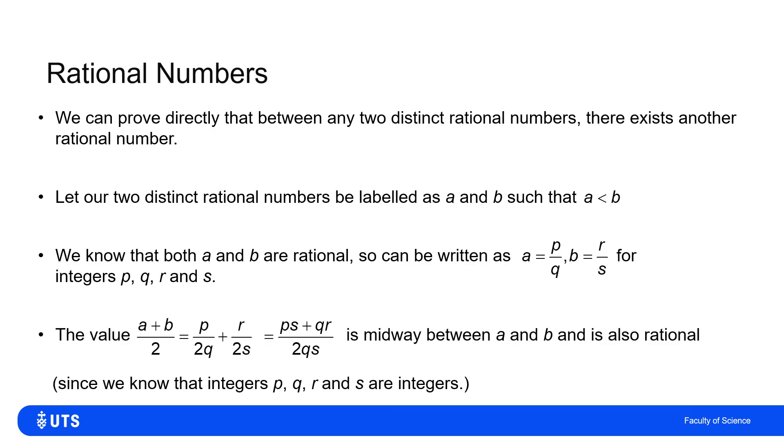Now, if I work out the average, the midpoint of A and B, that's the average of P over Q and R over S. So it's P over 2Q plus R over 2S, which I can write as P S plus QR over 2QS. If I put it all over the common denominator. And that itself is rational.